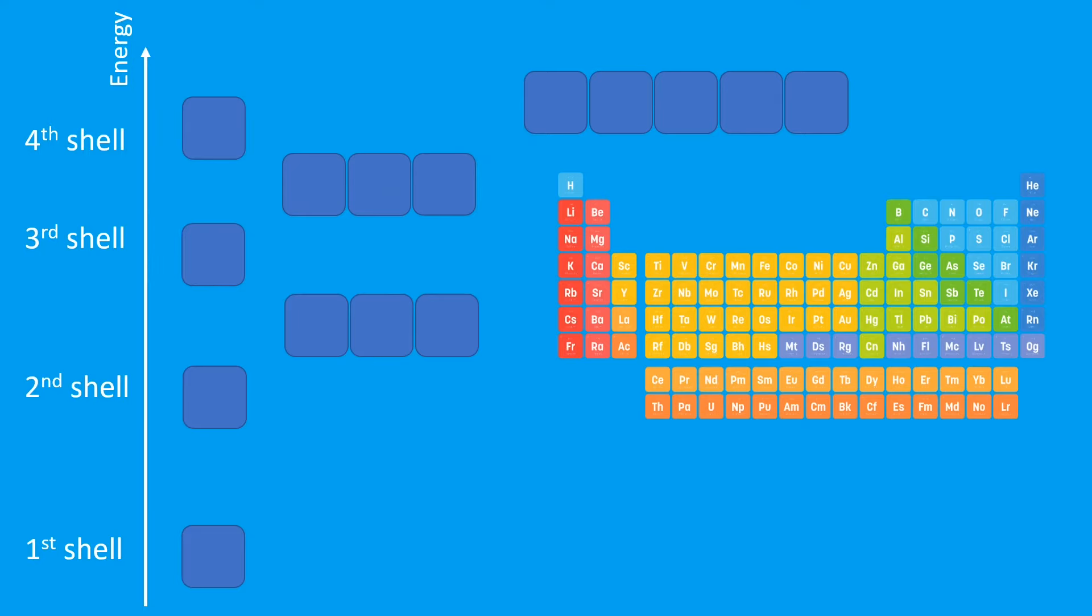Let's look at some examples for electron configuration. I've put the periodic table on here because the periodic table is actually set out in these s, p, d, and f blocks. For example, this section over here on the left is known as the s block. This block over here on the right is the p block. The block in the middle is the d block, and the block down the bottom is the f block.